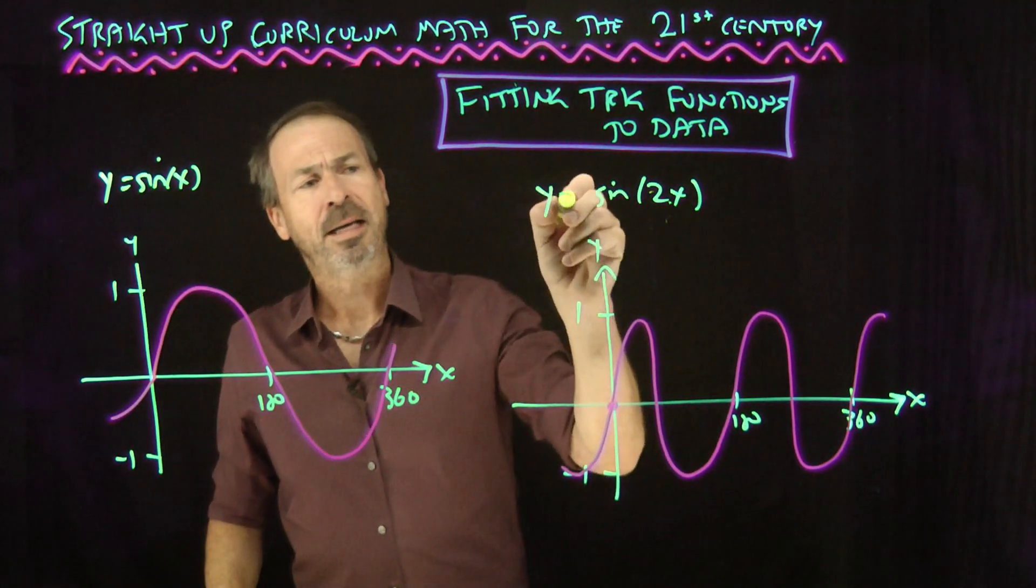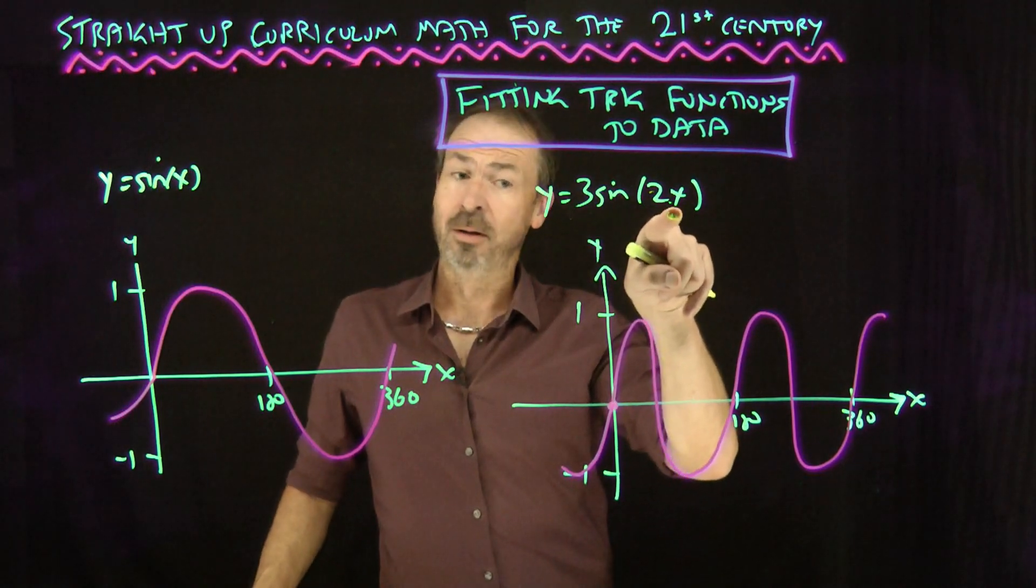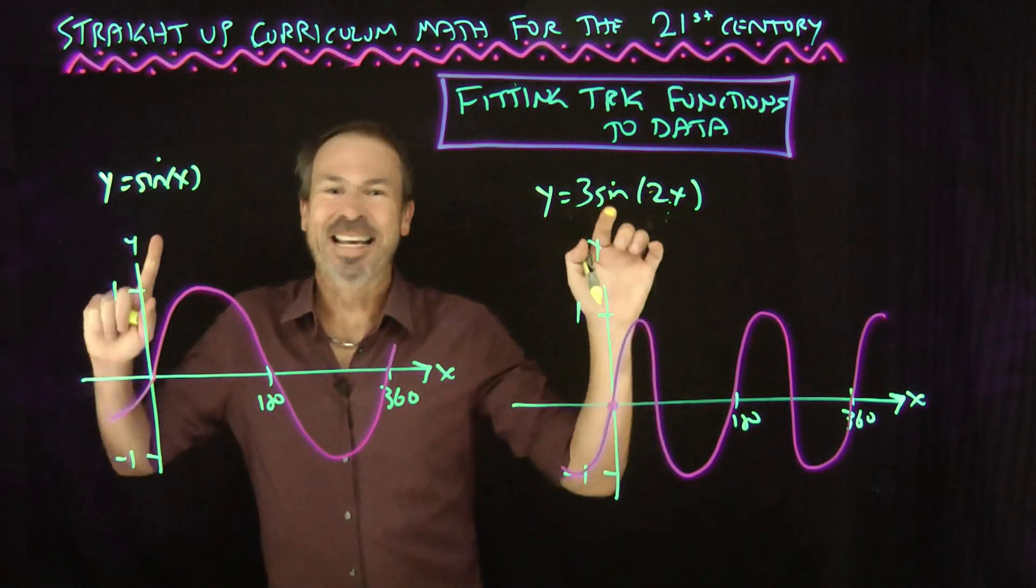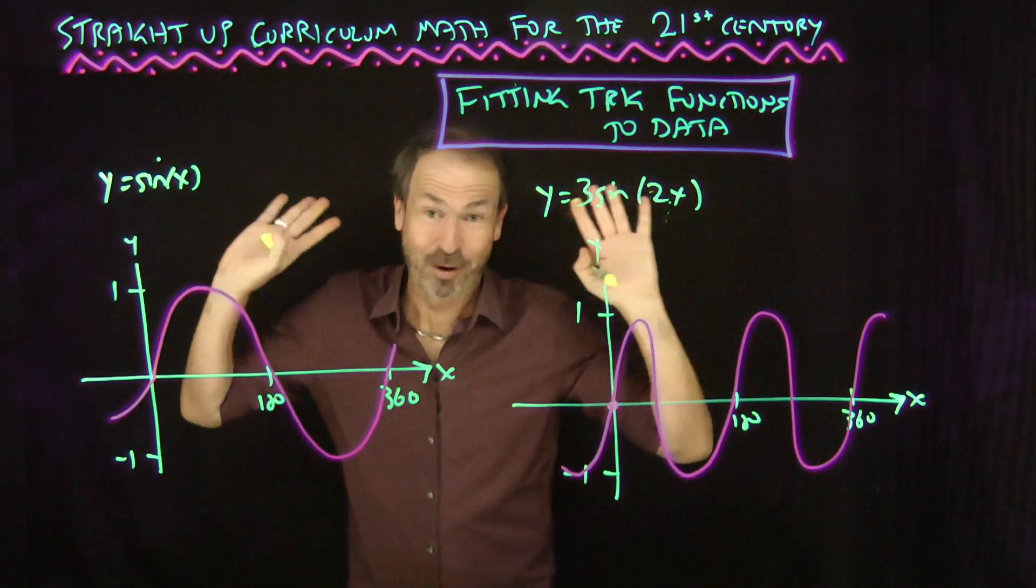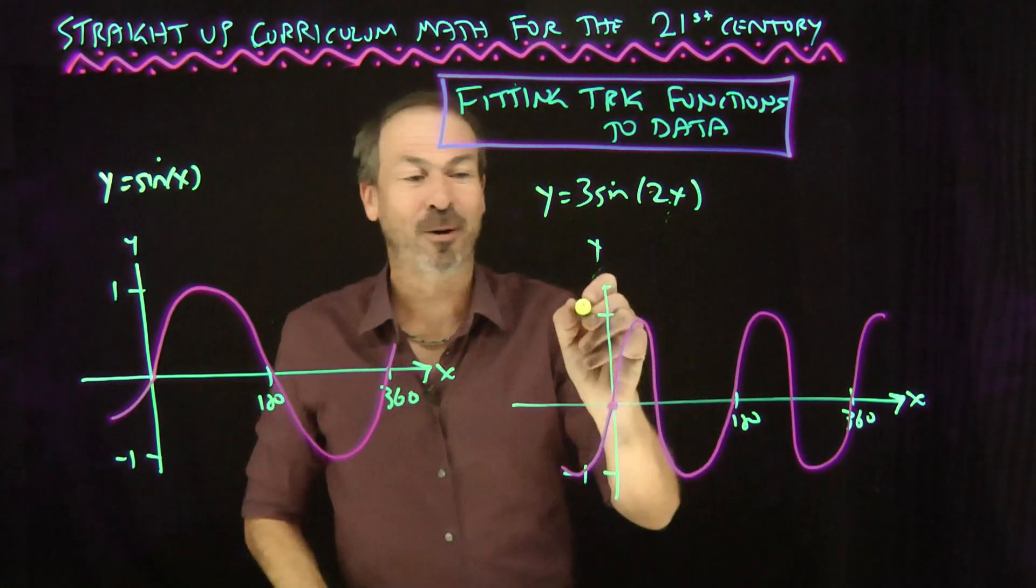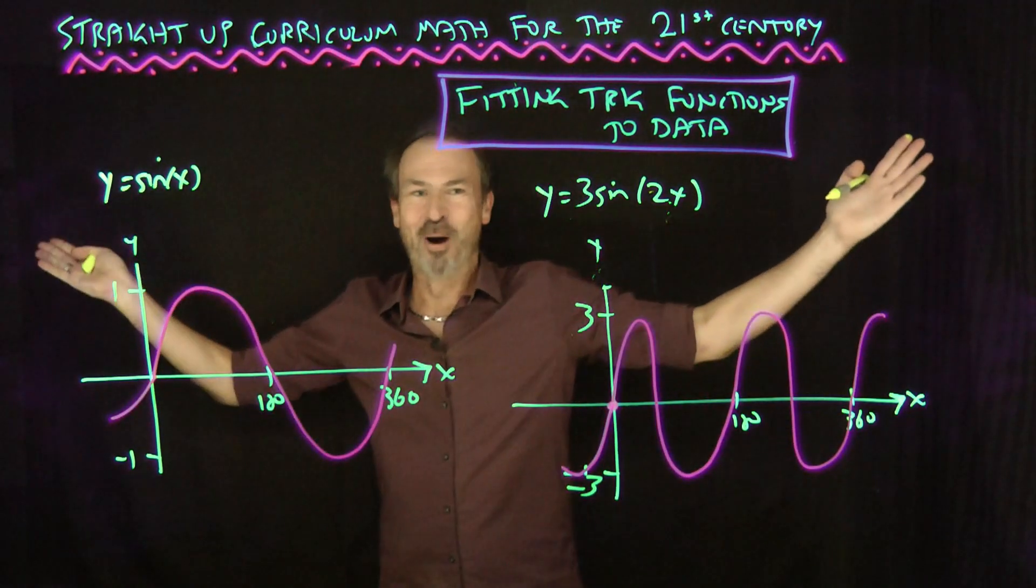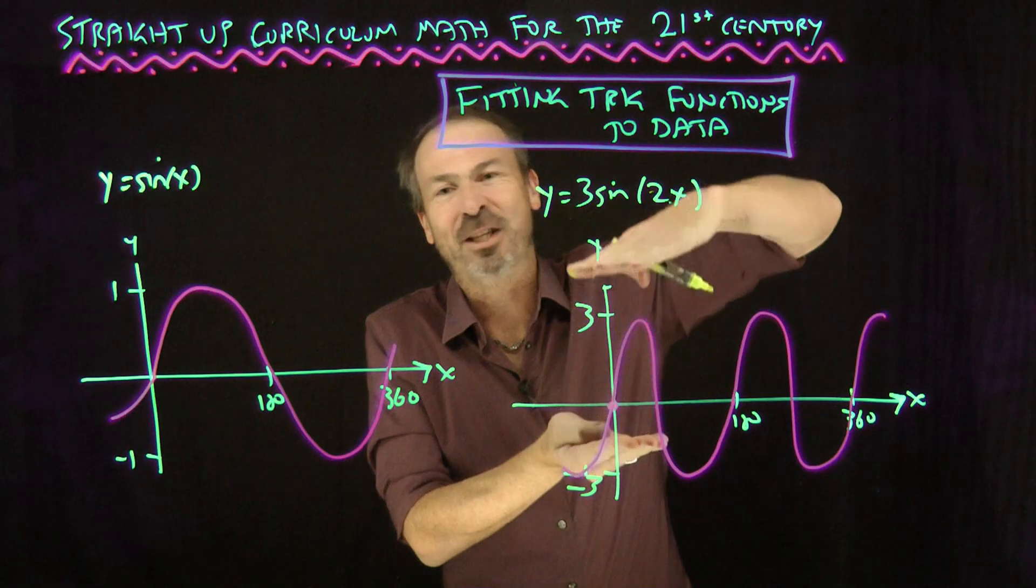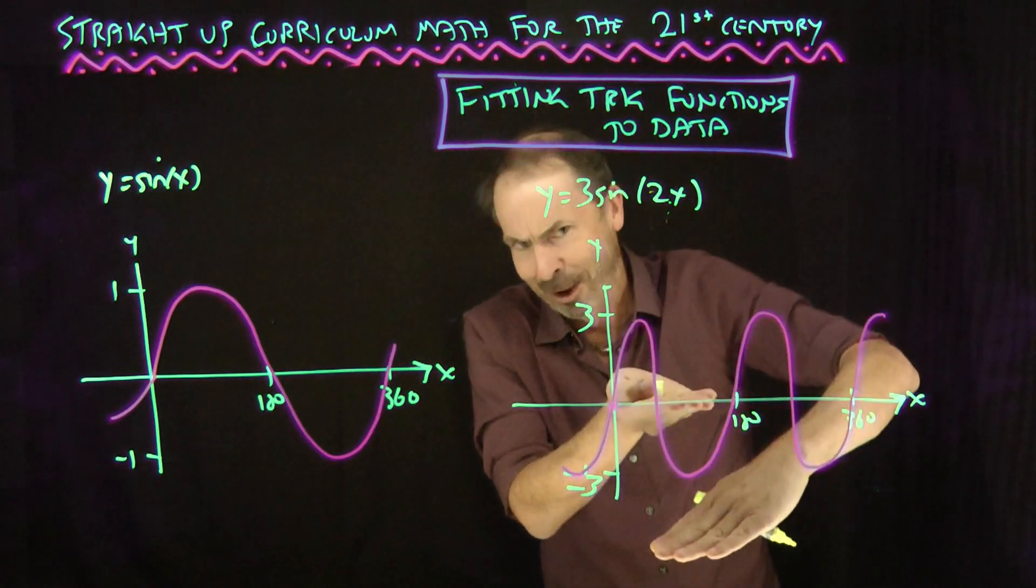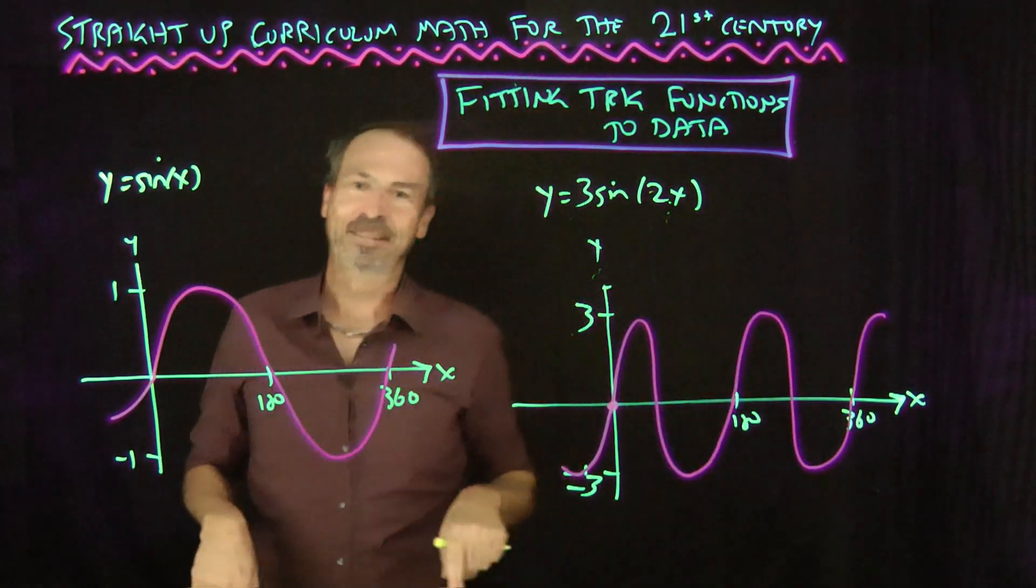Let's keep messing around with it. Well, if I put a number in front of everything, y values now triple what they were before. If this is one high, it'll now be triple that, three high. If this is one low, it'll now be three low. There's my graph of y equals 3 times sine of 2x.